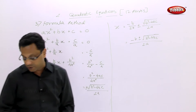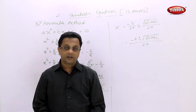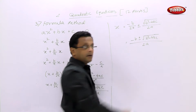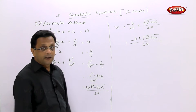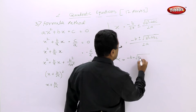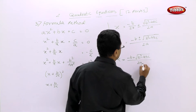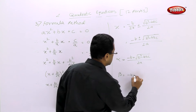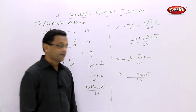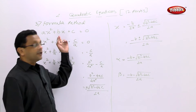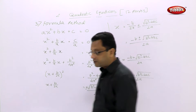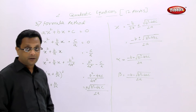The two roots are denoted by alpha and beta. So alpha = (−B + √(B² − 4AC)) / 2A and beta = (−B − √(B² − 4AC)) / 2A. These are the two roots of the quadratic equation — this is the Siddhacharya formula, derived by the ancient Indian mathematician Siddhacharya.